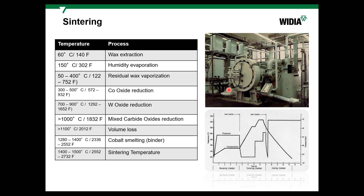The pressed insert is only a preliminary shape — it is porous and extremely brittle. If you push it with your finger you will destroy it. Only the wax holds it together and it has no useful mechanical properties yet. To acquire the true properties of carbide, we must sinter it.